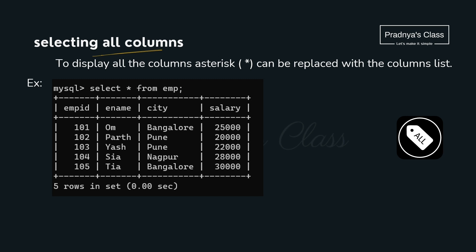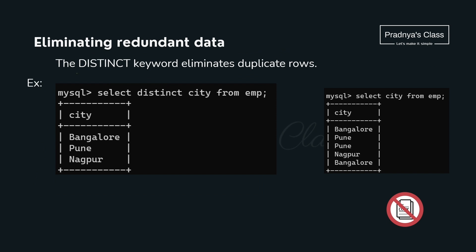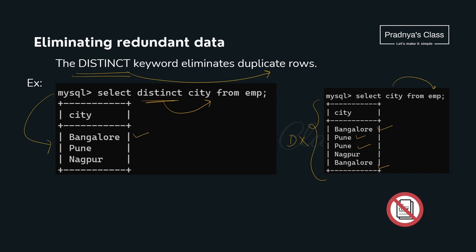If you want to display all the columns of the table, we will be using star (*), also called the all operator. Look at the command: SELECT * FROM employee — all the columns are displayed. One more important keyword is DISTINCT — it eliminates duplicate rows. Look at the city column; there are duplicate values for Bangalore and Pune. After applying DISTINCT, Bangalore and Pune each appear only once.